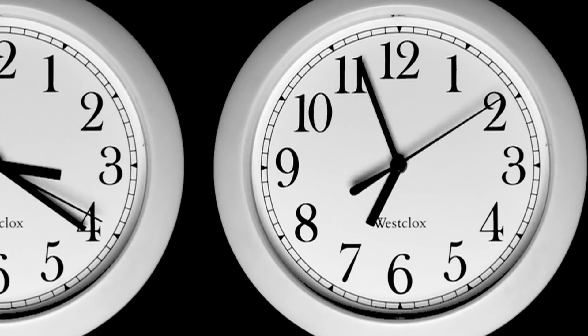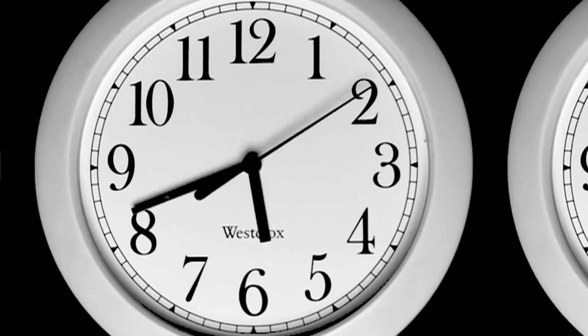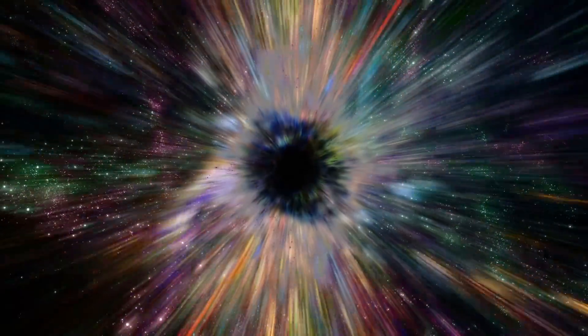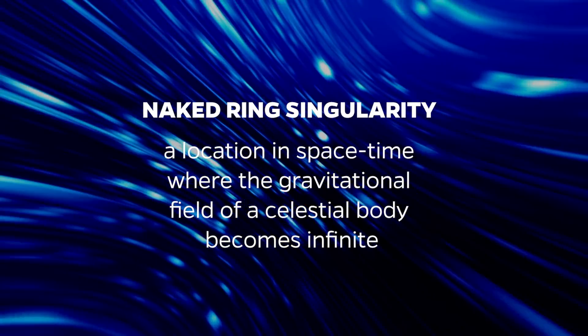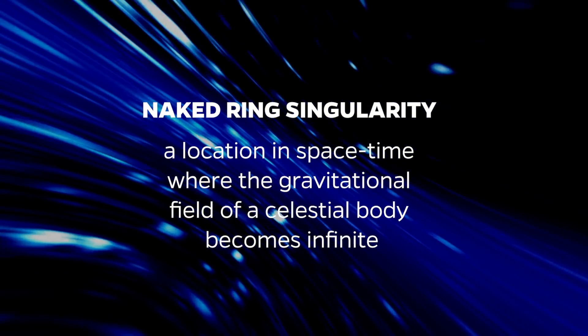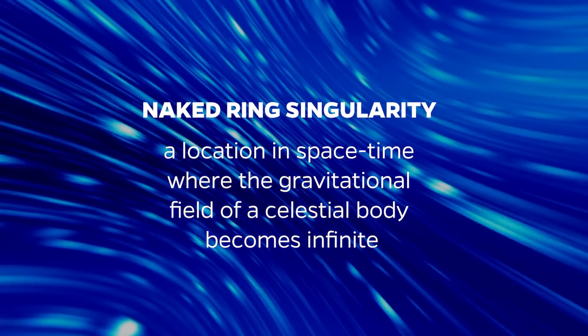Going backward in time is the one that is hard. And in order to go backward in time, either you have to figure out how to make a loop in space time, or you can make what's called a naked ring singularity in space time. Then going through the ring and around, then you can go back in time.